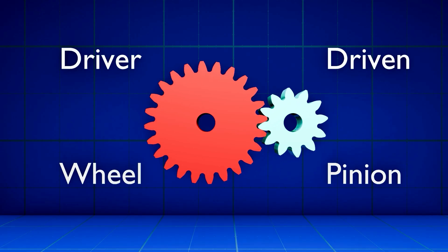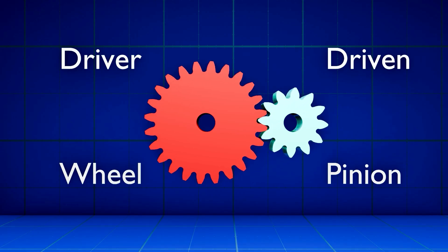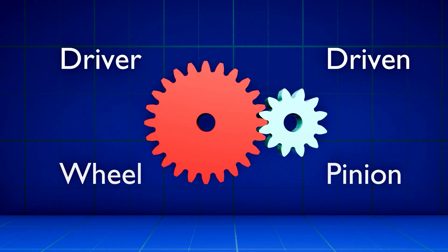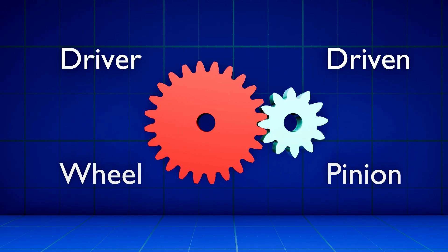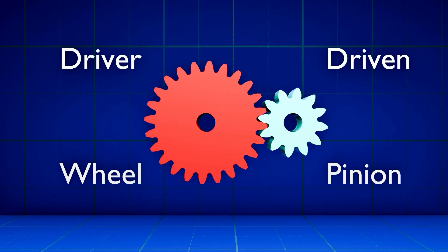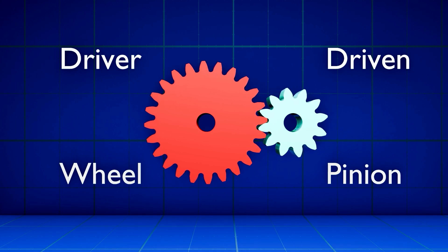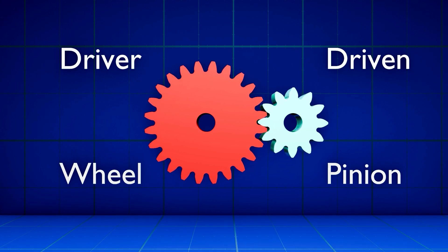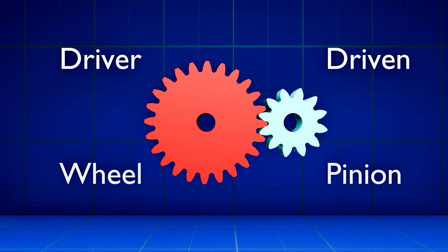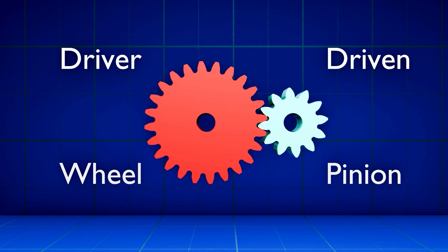Now let's talk about gear terminology. The gear connected to the power source, like a motor or engine, is known as the driver gear, while the gear it meshes with is called the driven gear. Between these two gears, the smaller one is called the pinion and the larger one is called the wheel.